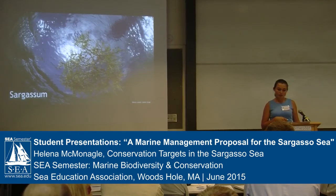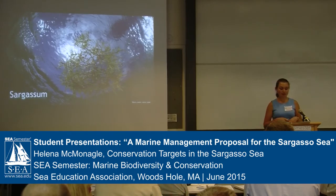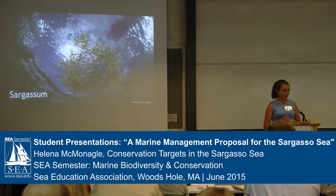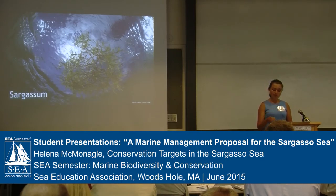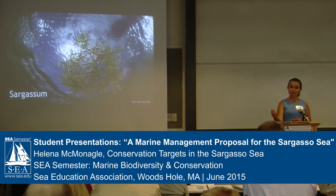These sargassum species are so abundant that the Sargasso Sea was named after them. Who cares about these seaweeds living out in the middle of the ocean? Like seamounts, sargassum acts as an oasis of life in what is otherwise a relatively barren open ocean environment, because there is close nutrient cycling between the animals that live in sargassum and the sargassum seaweed itself.